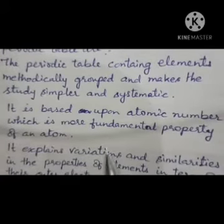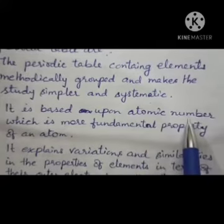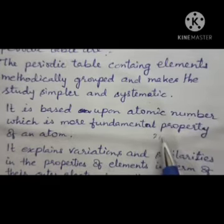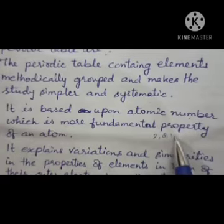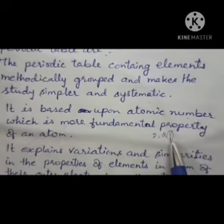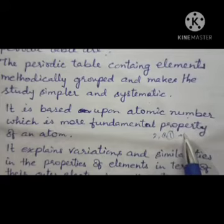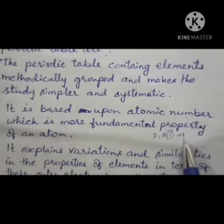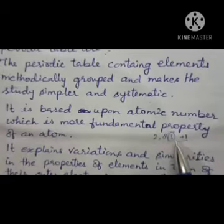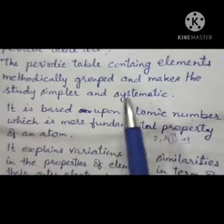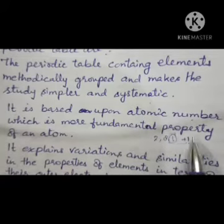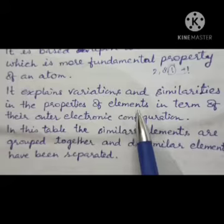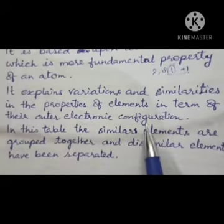With the help of atomic number we can find out electronic configuration, and from electronic configuration we can find out valency electrons and thus the valency. Chemical properties depend on valency electrons. The modern periodic table also explains variations and similarities in properties of elements in terms of their outer electronic configuration.